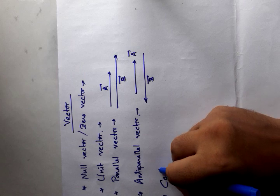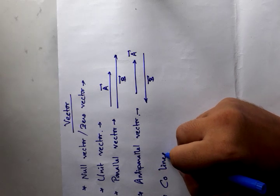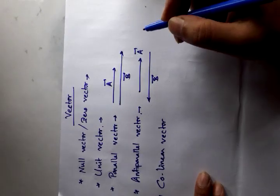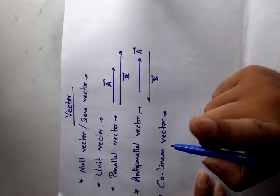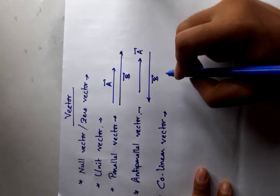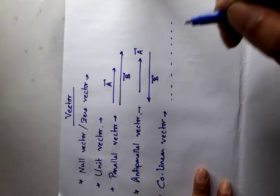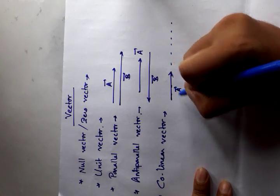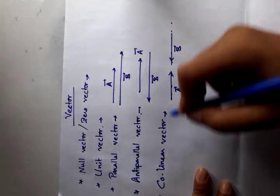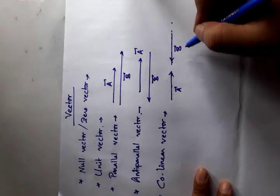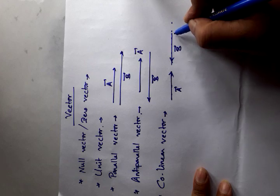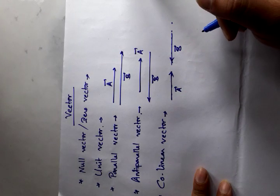Next, collinear vector. What is collinear vector? If two vectors act in a straight line, then this is called a collinear vector. Suppose, along a straight line, if we draw vector A along this and B along this, then A and B are called collinear vectors. Here, the direction of B may be along this way and it is also called a collinear vector.